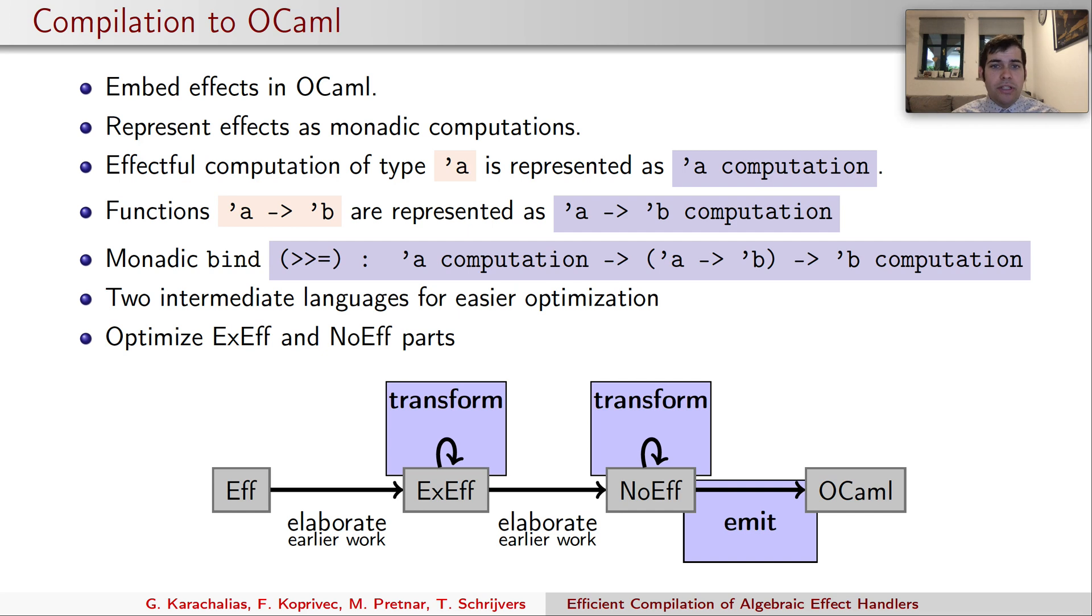More specifically, we use two intermediate languages, XF and NOF, as our optimization targets. Optimize each one of them, and then emit the final OCaml code. The main idea behind two optimization targets is to firstly optimize with explicit effect information in XF, and finally optimize NOF, an almost ML-like language without explicit effect information.